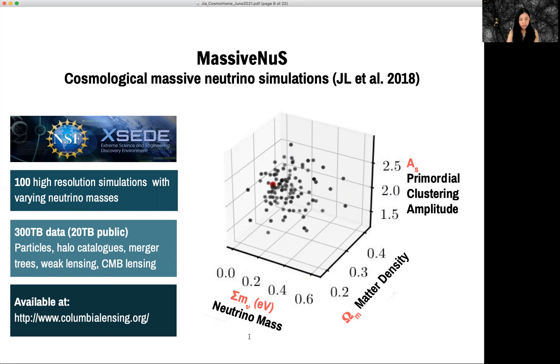So for each black dot, we have one high-resolution simulation and together with particle data, halo catalog, merger tree, weak lensing, and CMD lensing maps. Most of them are public available through a website here, columbialensing.org.